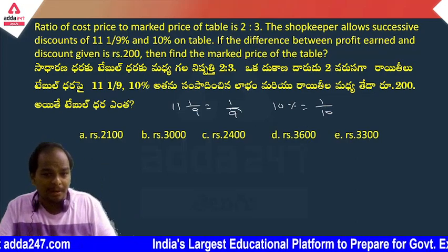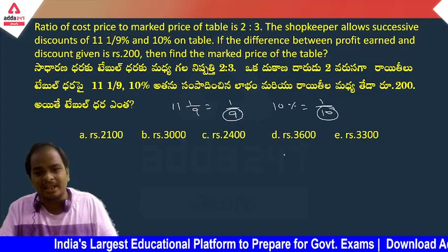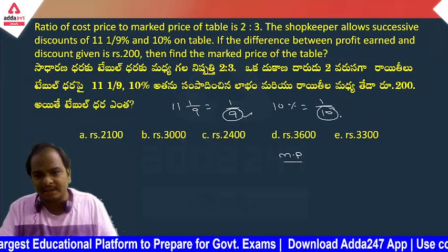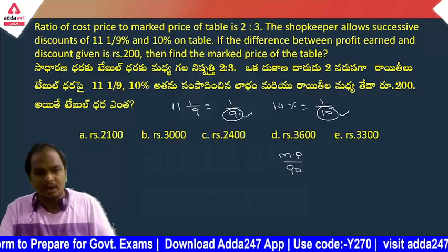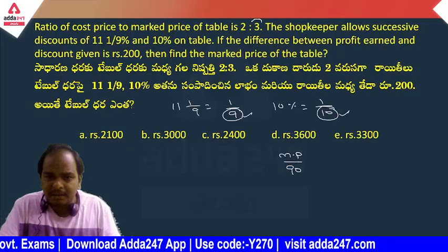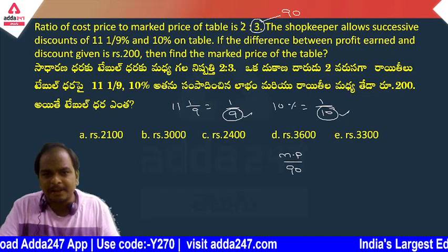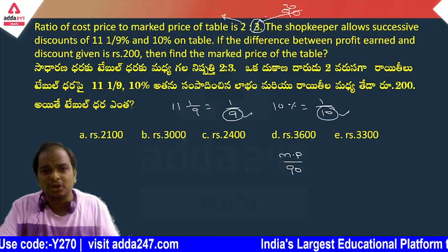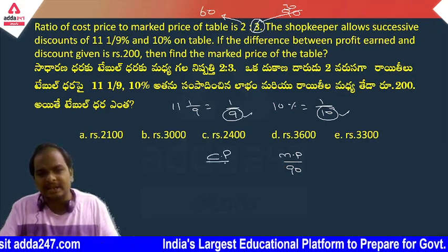The denominator value for the first discount is 9, and for the second discount it is 10. So the market price value is the LCM of these two denominators. LCM of 9 and 10 is 90. So market price is 3 parts, and 3 parts value is 90. Cost price is 2 parts: 2 times 30 is 60.